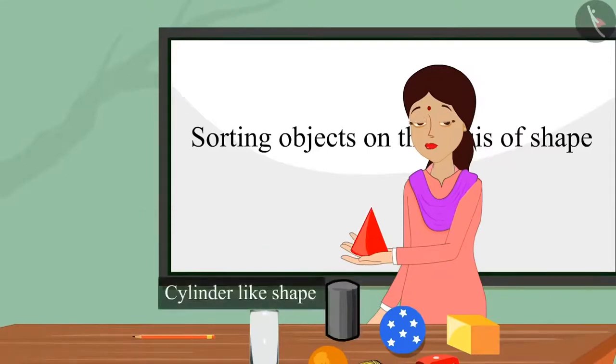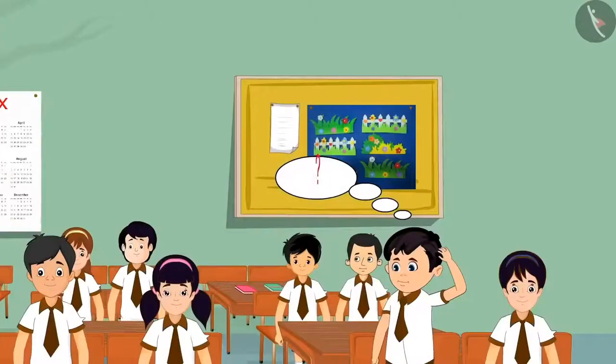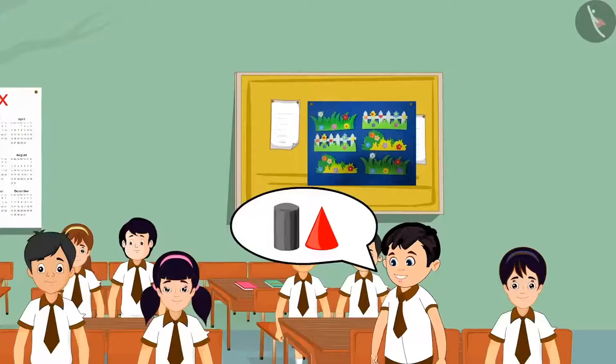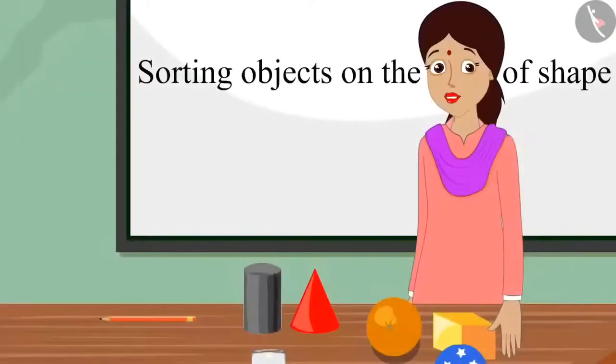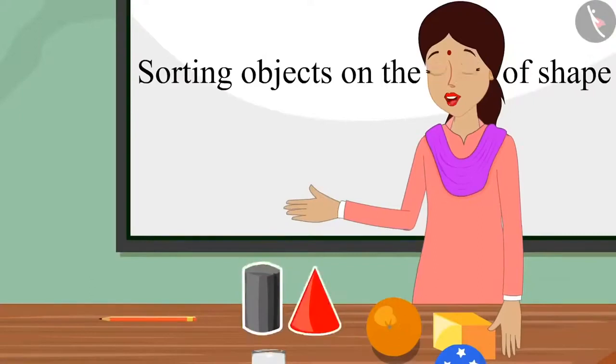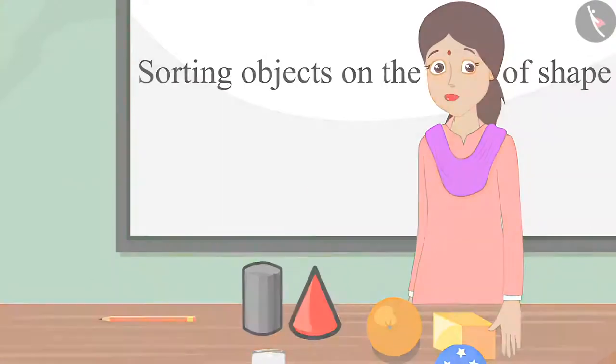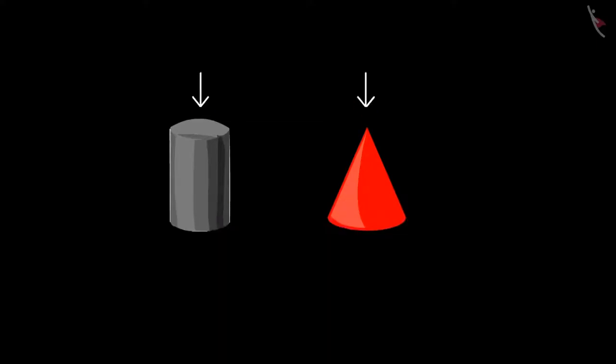And children, here we have a shape that looks like a cylinder. But Chotu did not understand the difference between these two figures. Teacher, but both these shapes look alike. Chotu, why do you think these two shapes are the same? Teacher, see this — this shape's base is round, and the other shape also has a round base. Chotu, you are right — both of these shapes are round at the bottom. But if we look at both these figures from above, the cylinder-like shape is round from the top and the cone-like shape is pointed from the top.